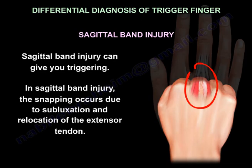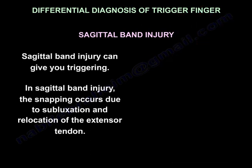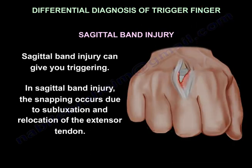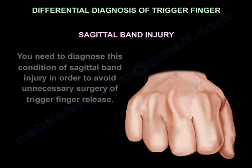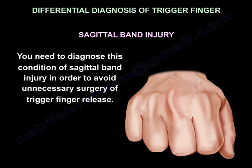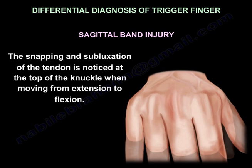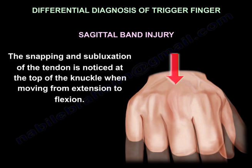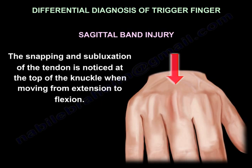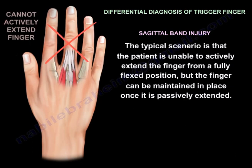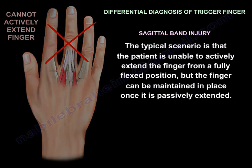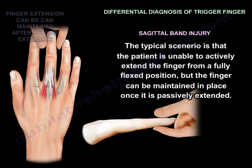Sagittal band injury can give you triggering. In sagittal band injury, the snapping occurs due to subluxation and relocation of the extensor tendon. You need to diagnose this condition to avoid unnecessary trigger finger release surgery. The snapping and subluxation of the tendon is noticed at the top of the knuckle when moving from extension to flexion. The typical scenario is the patient is unable to actively extend the finger from a fully flexed position, but the finger can be maintained in place once it is passively extended.